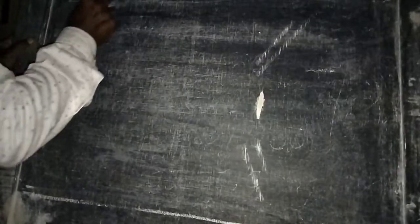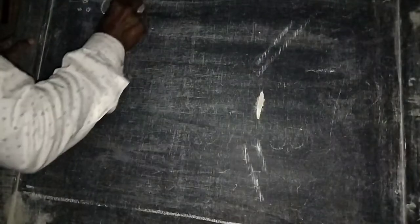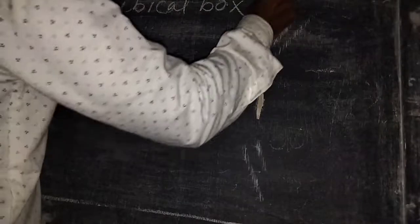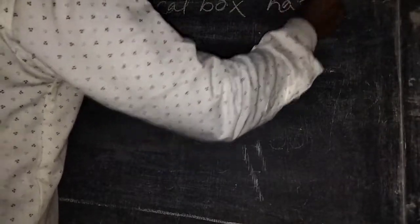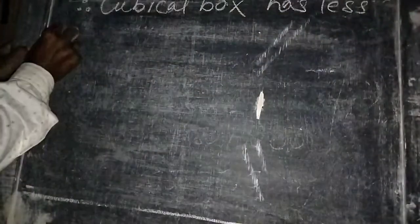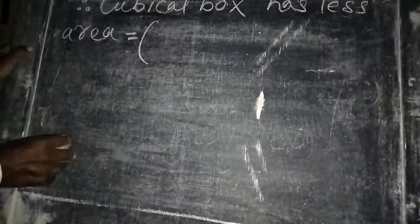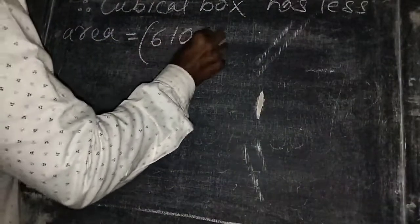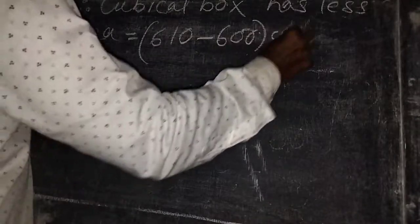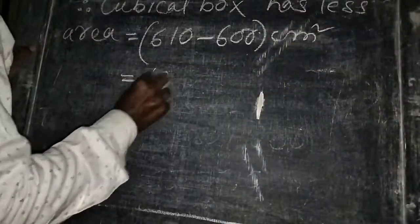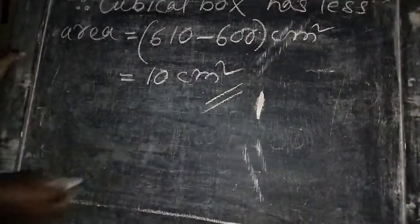Therefore, total surface area of rectangular box minus cubical box equals 610 minus 600 equals 10 cm square.